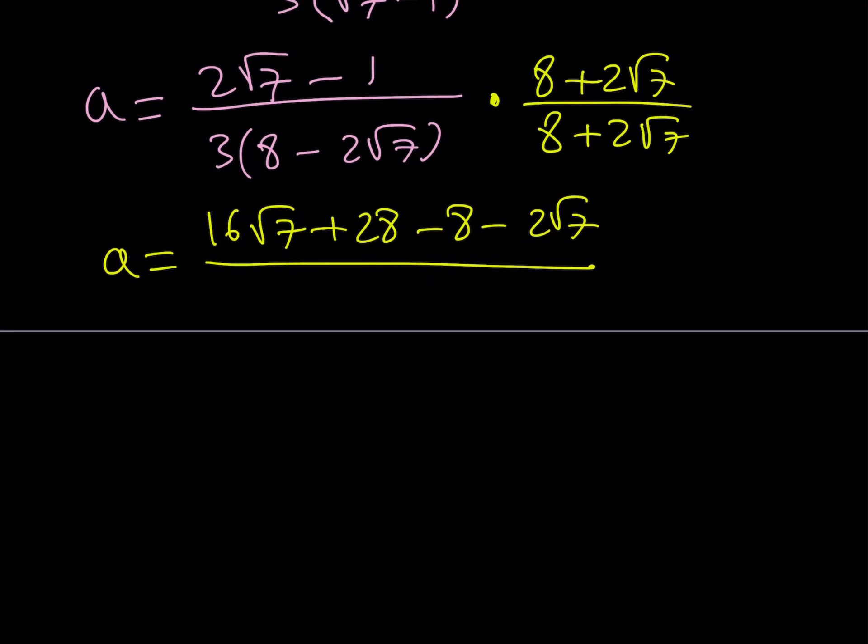And we can simplify this later on. Here these two expressions are conjugates, so if you multiply them you get the difference of two squares which is 64 - 2√7 squared, which is 28. So 64 - 28, that's what you get. And 64 - 28, can I just say that it's 36? Cool.